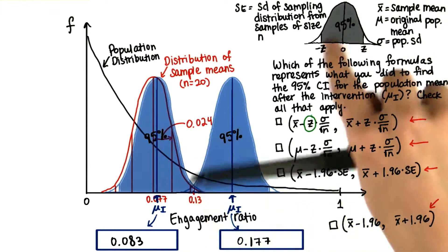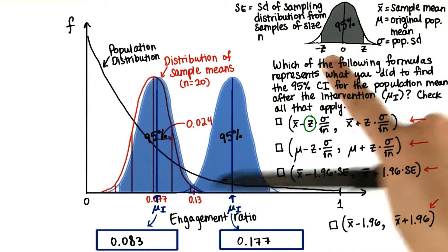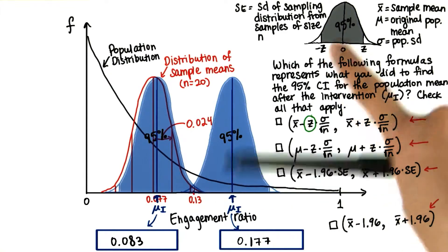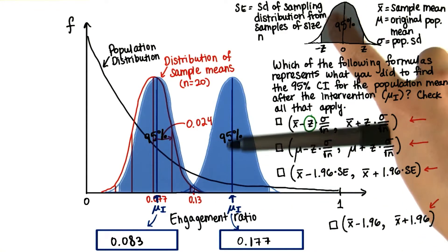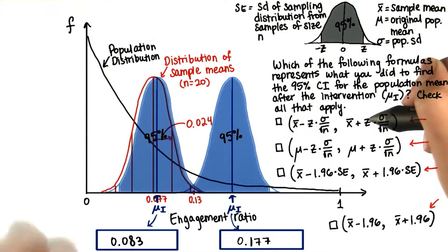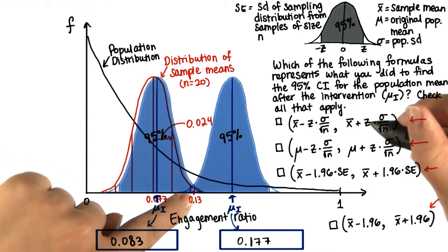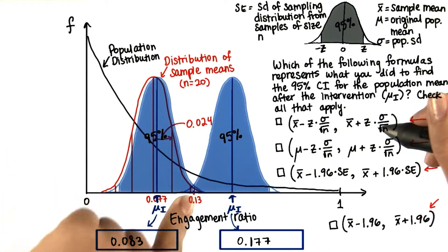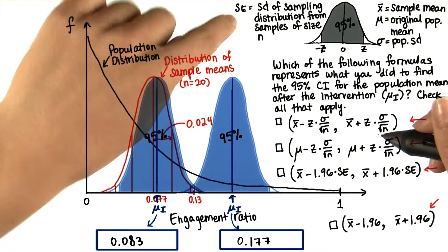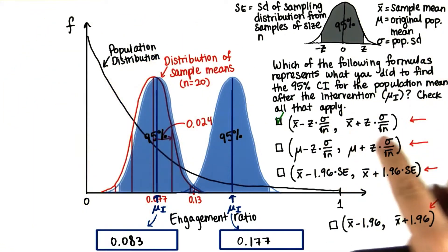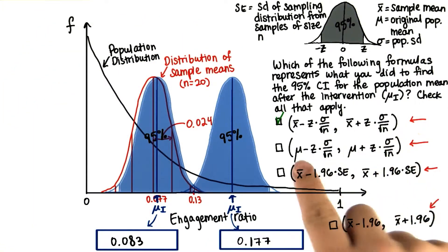And that's what we did, with z here being 1.96, since this is 95%. And then over here on the other side, we have our sample mean plus z amounts of standard deviations or standard errors. So this is what we did to find the confidence interval.